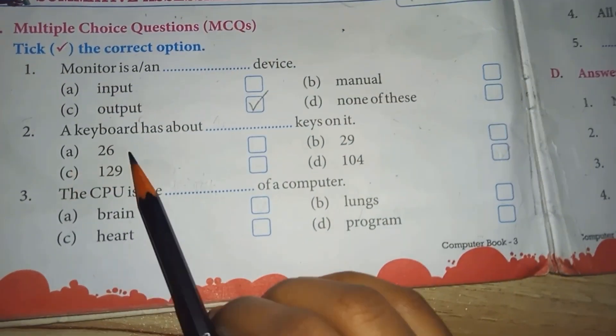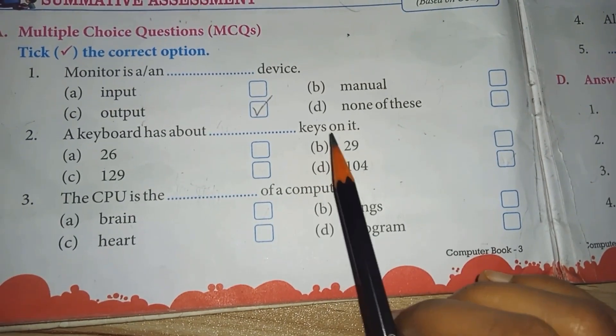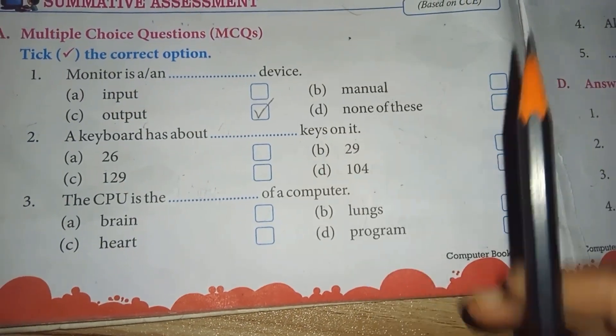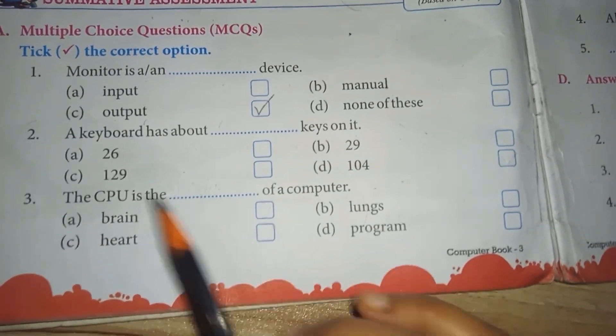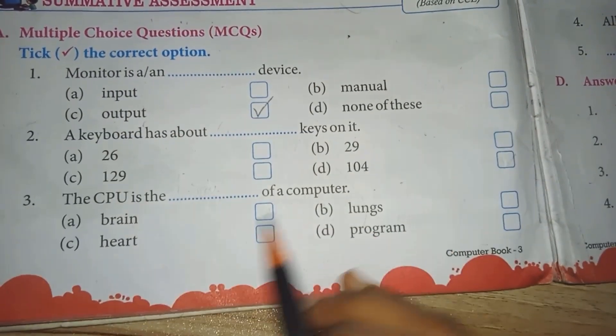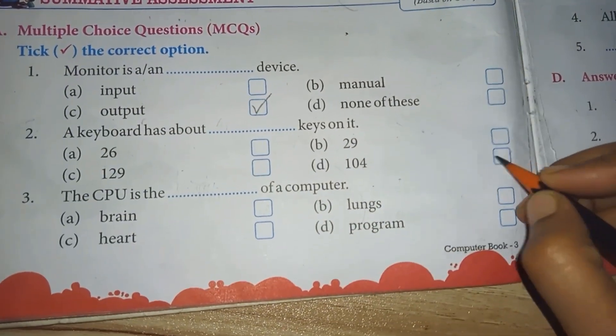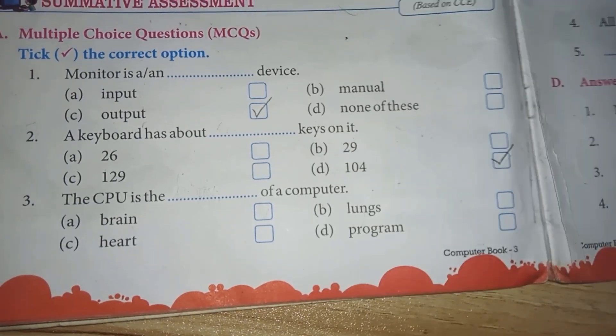A keyboard has about blank keys on it. Which one is the keyboard? How many keys are there? 104.